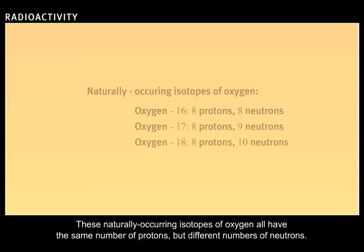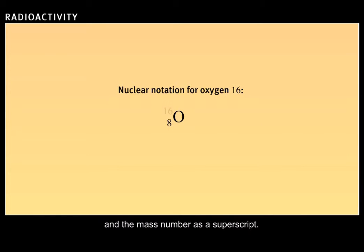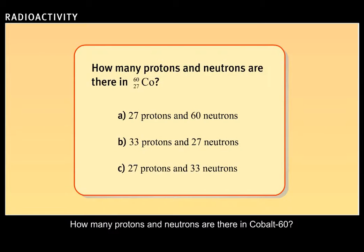These naturally occurring isotopes of oxygen all have the same number of protons, but different numbers of neutrons. It is sometimes convenient to represent different isotopes of an element using a nuclear notation consisting of the element symbol, with the atomic number as a subscript and the mass number as a superscript. How many protons and neutrons are there in cobalt-60?